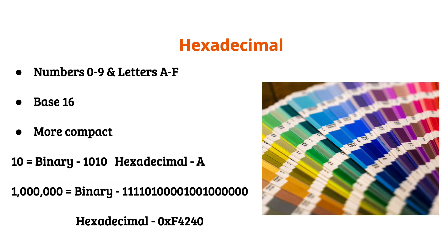Hexadecimal is another notational system used in computing. Instead of only having two values — one and zero — there are 16 values: zero through nine, and A through F. It is also referred to as base 16. The advantage of hexadecimal is that more data can be represented with fewer characters.